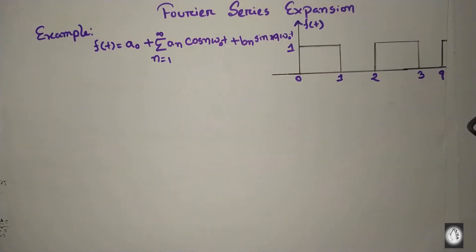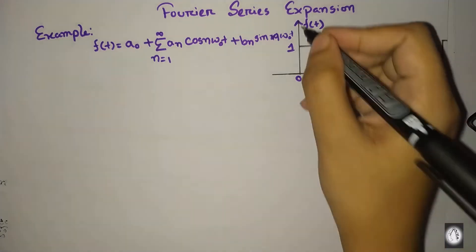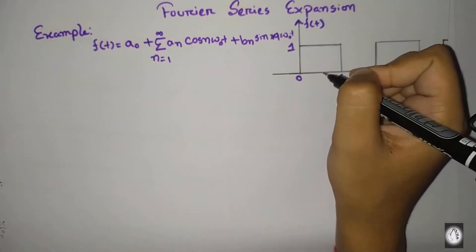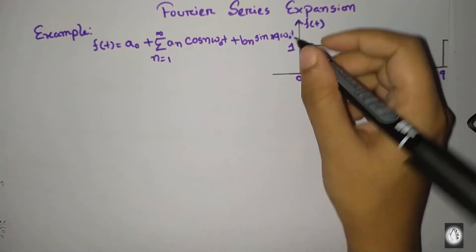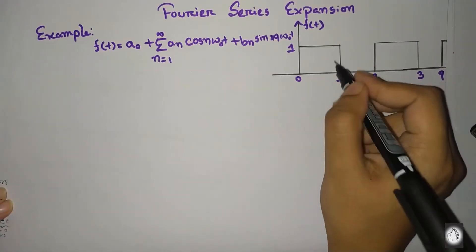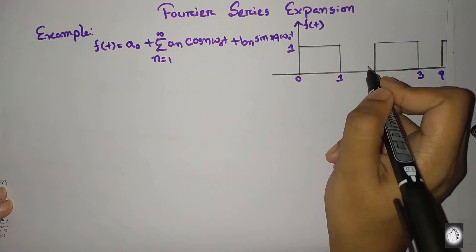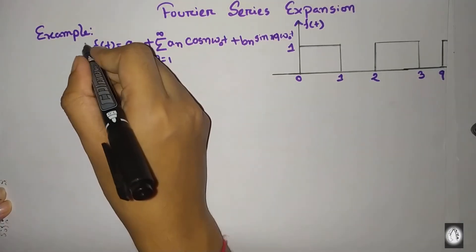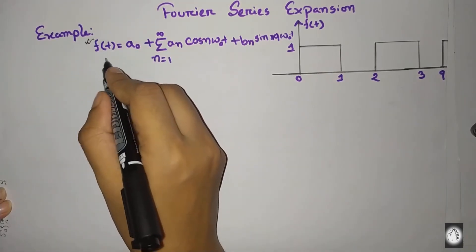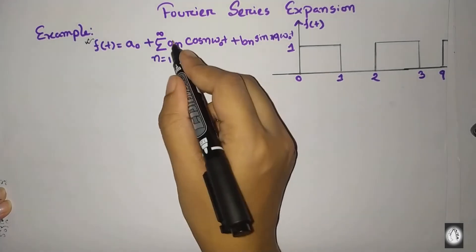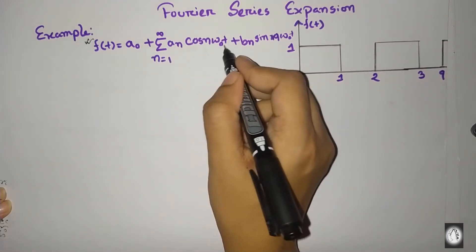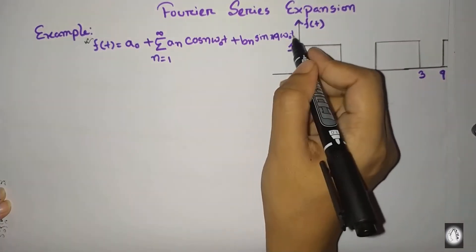Welcome to our channel. This video is called Trigonometric Fourier Series Expansion Example. The Fourier series expansion main formula is: f(t) = a₀ + summation of n=1 to infinity of [aₙ cos(nω₀t) + bₙ sin(nω₀t)].